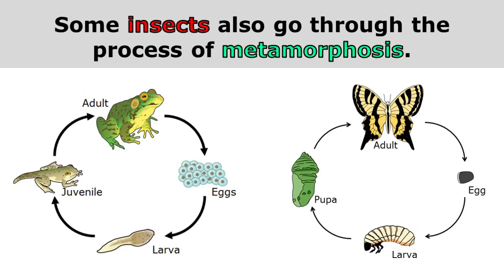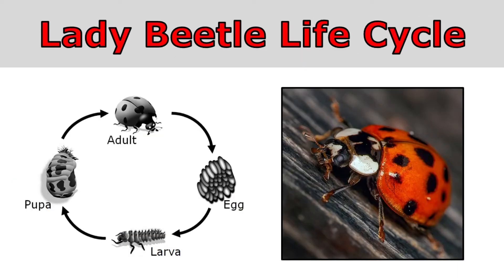Some insects also go through the process of metamorphosis. You can see that the frog and the butterfly both lay eggs, and those eggs both hatch into larvae that don't look anything like the adults. We'll take a look at the lady beetle life cycle to understand the stages of an insect that goes through complete metamorphosis.